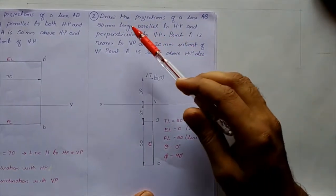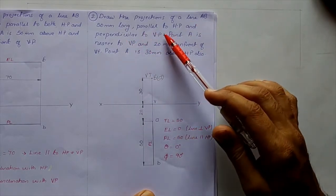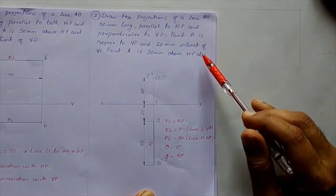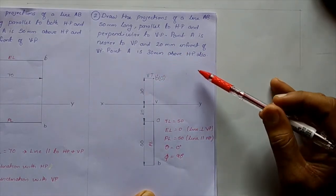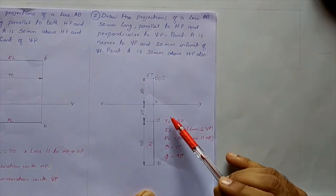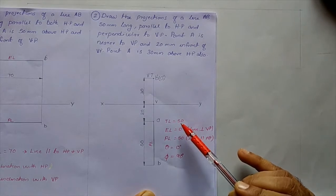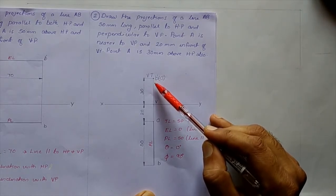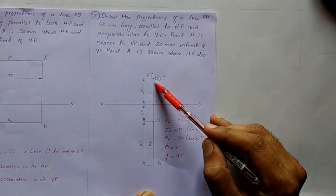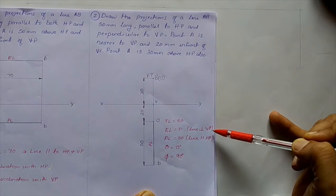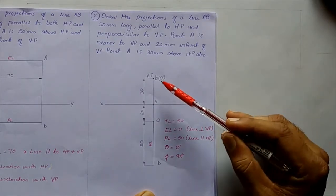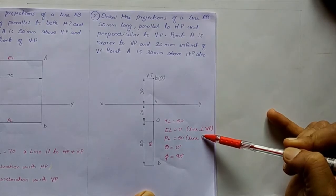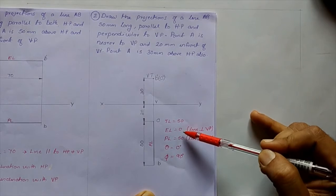Regarding the second question: draw the projections of a line AB 50 mm long, parallel to HP and perpendicular to VP. Point A is nearer to VP and 20 mm in front of VP; point A is 30 mm above HP. The true length of the line is 50 mm. The length of the front view is 0 — you can see the front view appears as a dot — because the line is perpendicular to VP. When observing from the front, the line appears as a point.